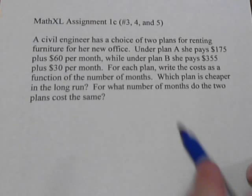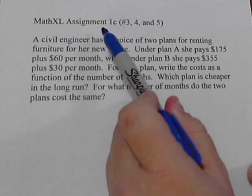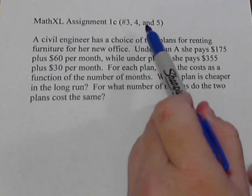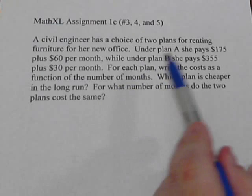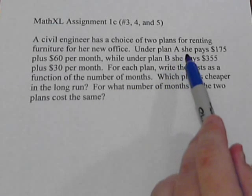Here's a problem similar to the homework in your MathXL Assignment 1c. These are like numbers 3, 4, and 5. Okay, so we've got a civil engineer who has a choice of two plans for renting furniture.